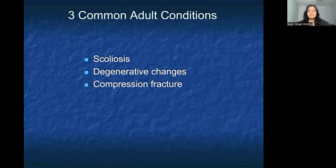There are three common adult conditions that we see in the thoracic spine that I wanted to review with you: scoliosis, degenerative changes, and compression fractures.